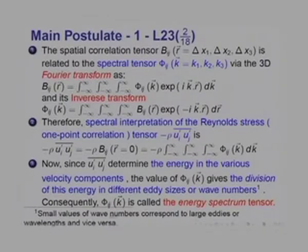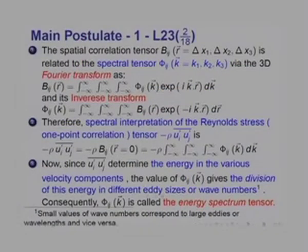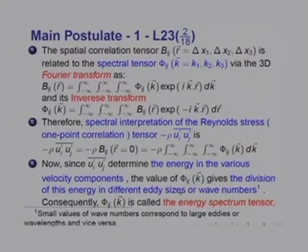The spectral interpretation of the Reynolds stress: the one-point correlation tensor ρ u_i' u_j', both measured at the same point, gives -ρ u_i' u_j' = -ρ B_ij(r=0) = -ρ ∫∫∫ φ_ij(k) dk. A small value of wave number corresponds to a large eddy and vice versa; a large wave number corresponds to a very small eddy. What the Fourier transform does is give you the division of the energy of the fluctuations in different eddy sizes. Consequently, φ_ij(k) is called the energy spectrum tensor.